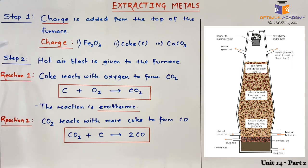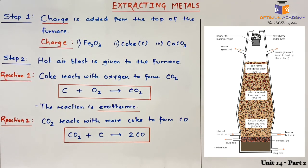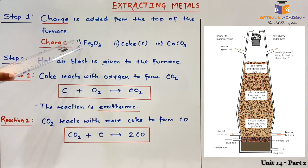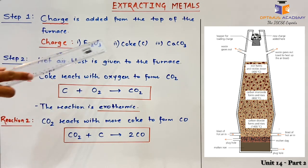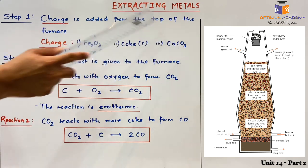We will see the step-by-step procedure and the reactions involved in extracting iron from hematite in the blast furnace. Step 1: charge is added from the top of the furnace. Charge is a mixture of three different components — iron oxide Fe2O3, carbon in the form of coke, and calcium carbonate.